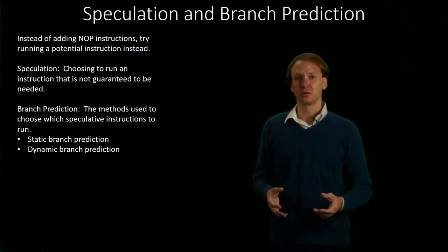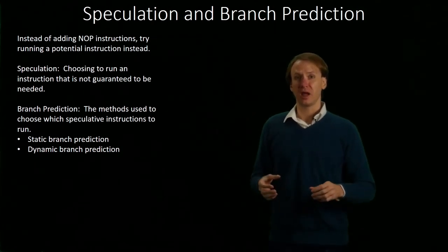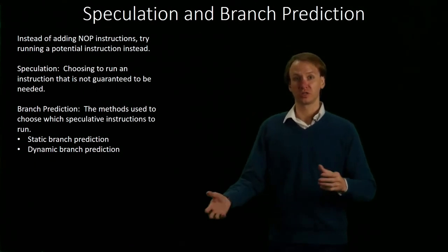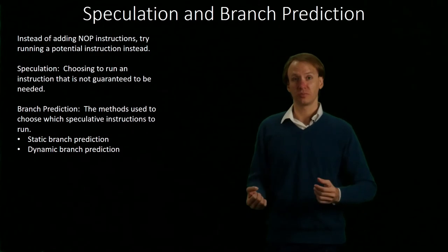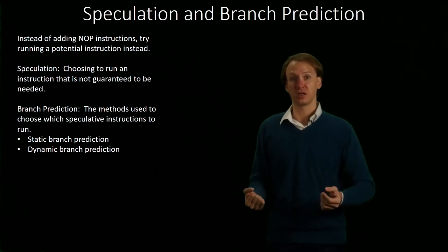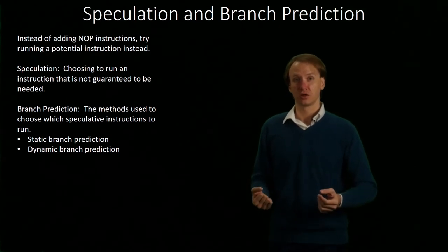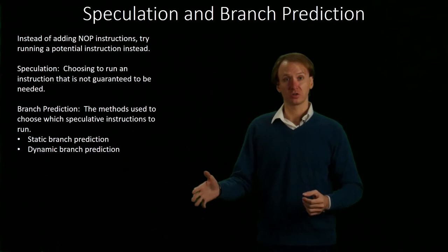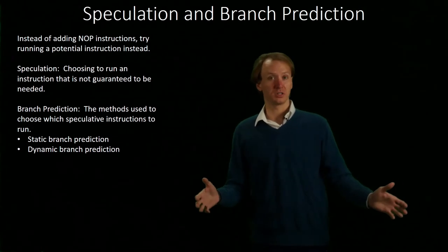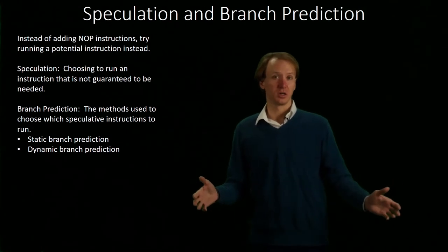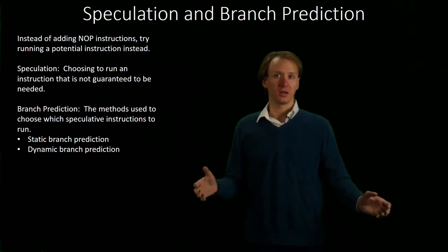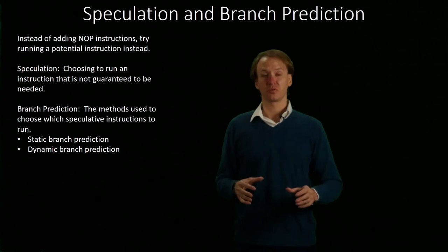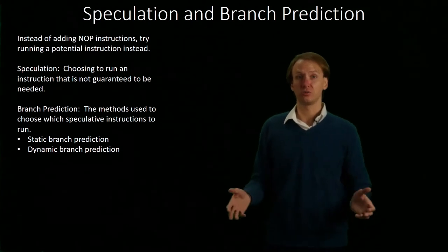Branch prediction will be how we decide to choose which of those two paths we should take. We will either predict that we're going to take the branch or that we're not going to take the branch, and we can come up with all sorts of schemes for how we want to do that.